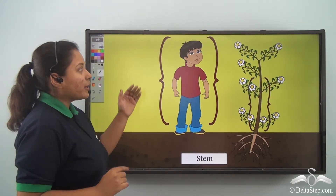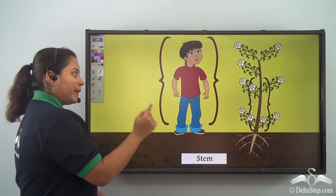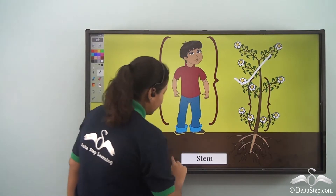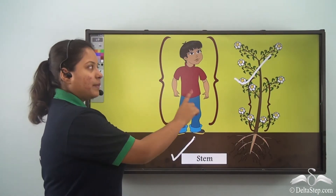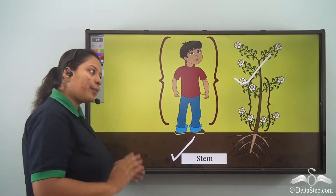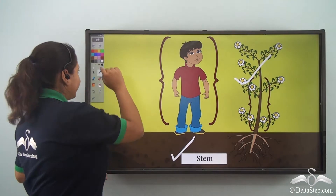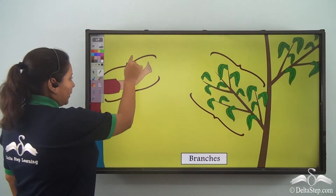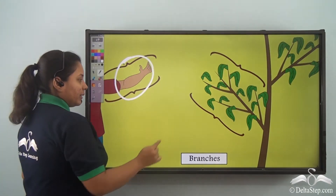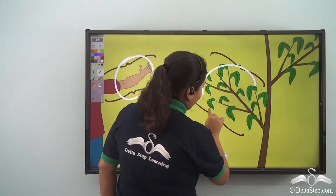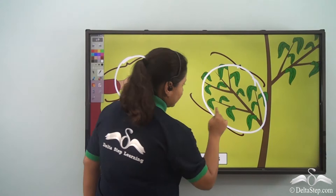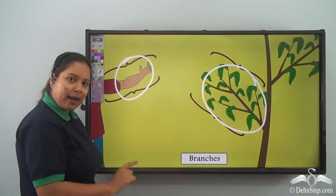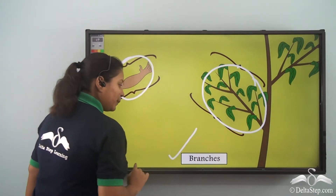Just like we have a body, the plant also has its body known as the stem. This helps the plant to stand properly. Now, just like we have got hands, the plant also has got branches. This looks like the hand of the plant — so these are branches.